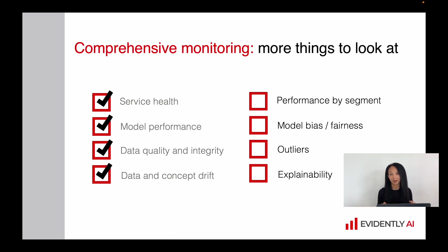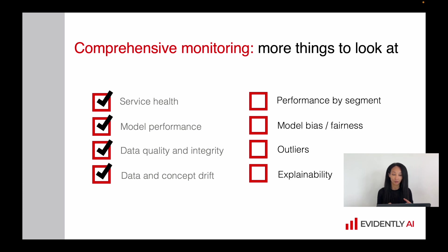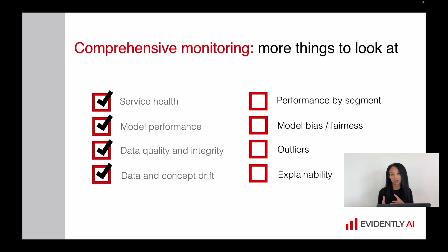If you implement recommender systems, you might want to generate user trust by sharing information about how exactly you generated those recommendations. If you retrain and update your model automatically and frequently, you may want to account for those explanations since you share them with users. Basically, you can implement many custom metrics to cover business risks and ensure you understand all aspects of your data pipeline and model.